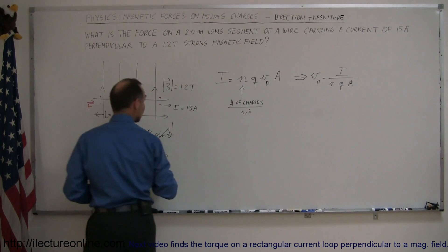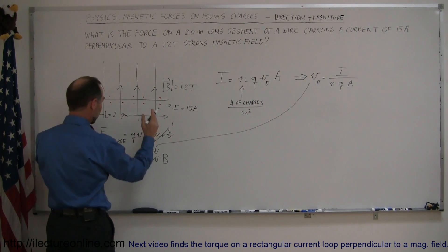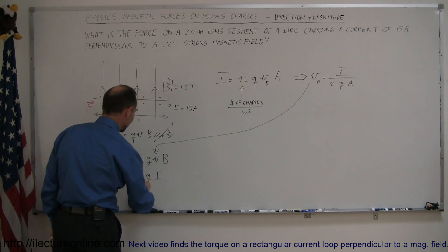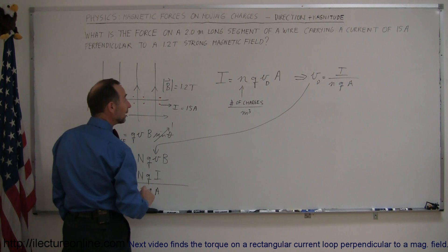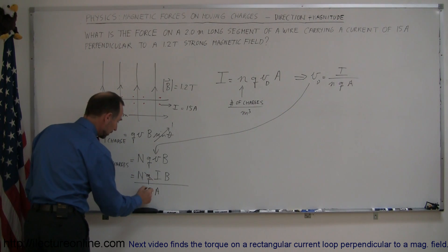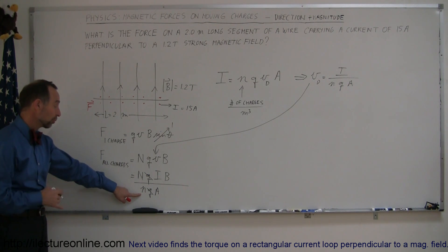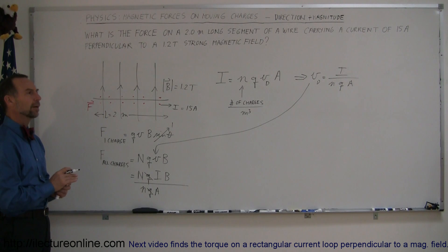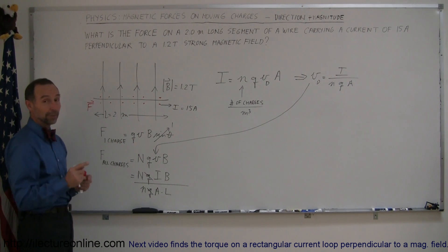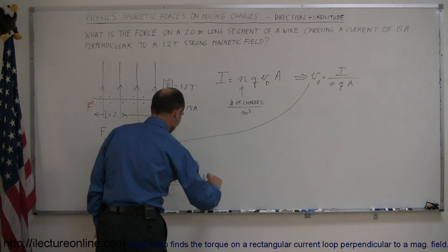We substitute that drift velocity back in for V in our force equation. So the force on all the charges in this current-carrying wire is N times Q times V, which is I divided by NQA, times B. The Q cancels out. Now, if we multiply the cross-sectional area A by the length of the wire L, we get the total volume of the wire. Multiplying both numerator and denominator by L, we can write A times L as volume, giving us N·IBL divided by N times the volume.